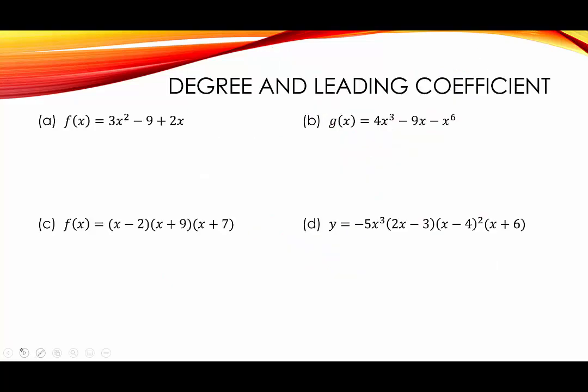We want to state the degree and the leading coefficient of each of these 4 polynomial functions. In letter a, we have f(x) = 3x² − 9 + 2x. This one's not written in standard form, so let's rewrite it as 3x² + 2x − 9. When I say standard form, I mean the exponents go in descending order. Now we see the degree — the largest exponent of any x — is 2, so this is a degree 2 polynomial. And the leading coefficient, the number multiplied to x², is 3.